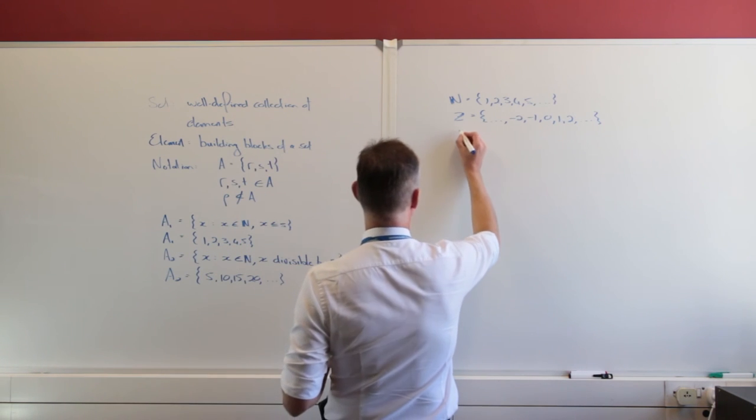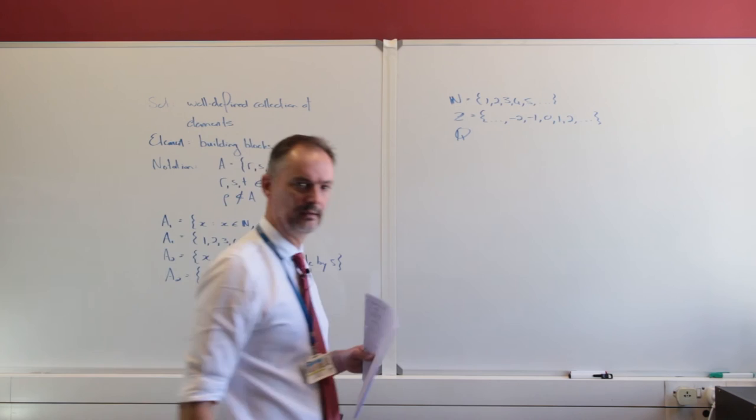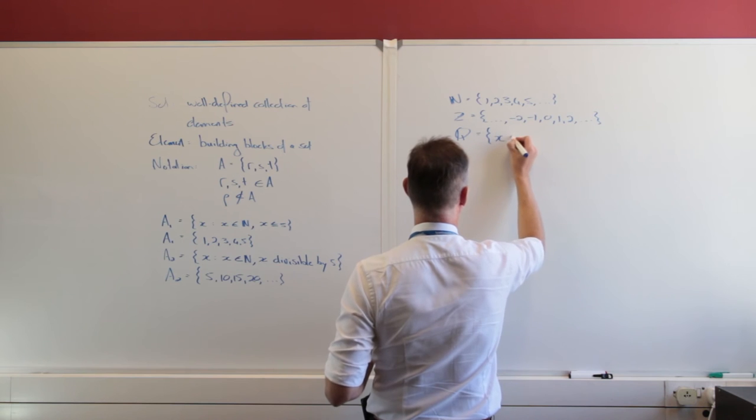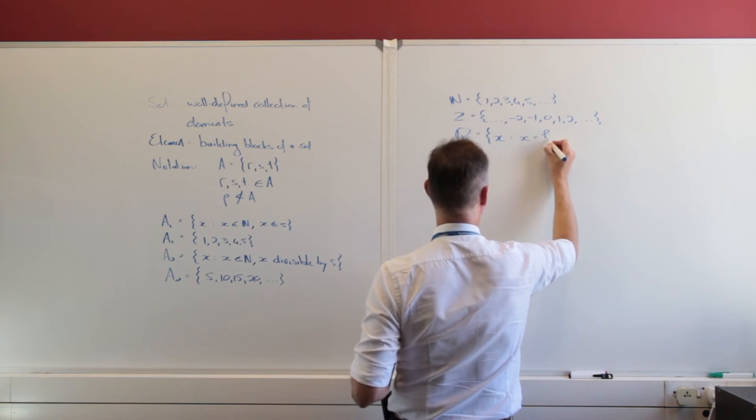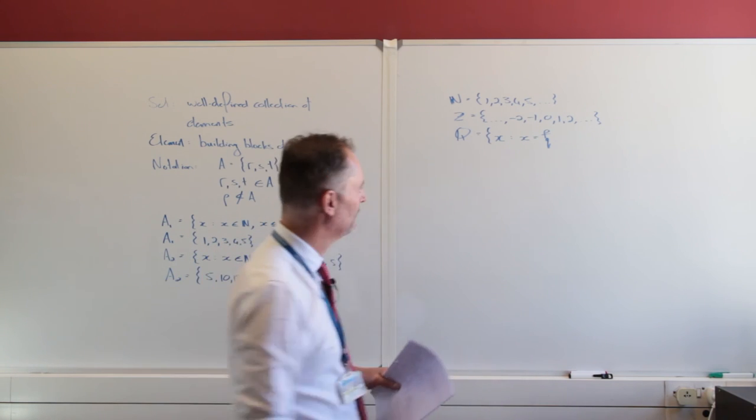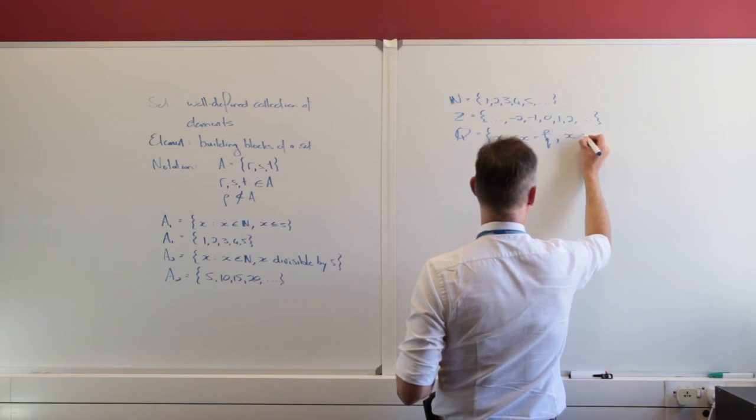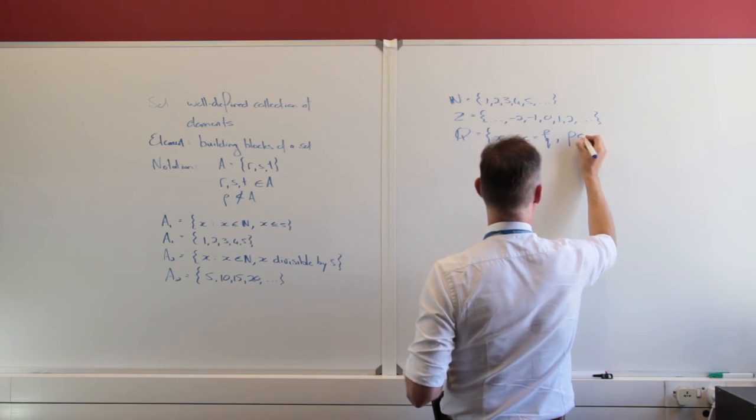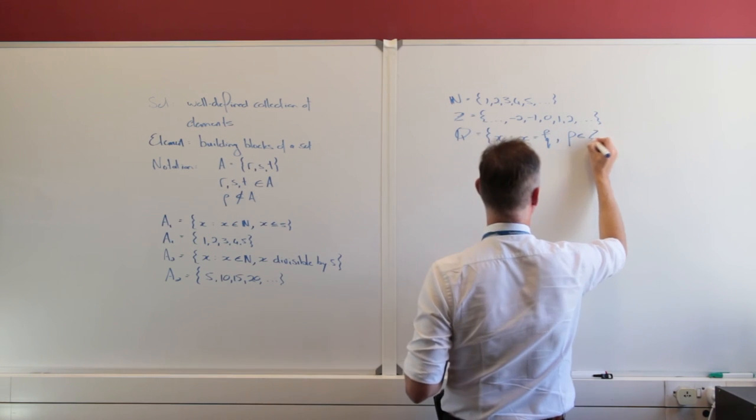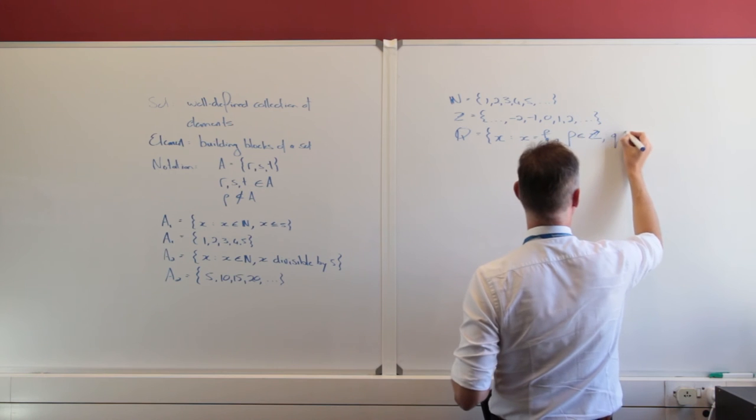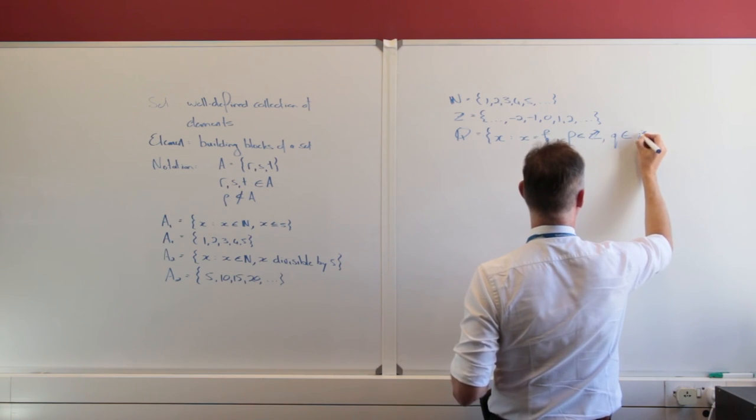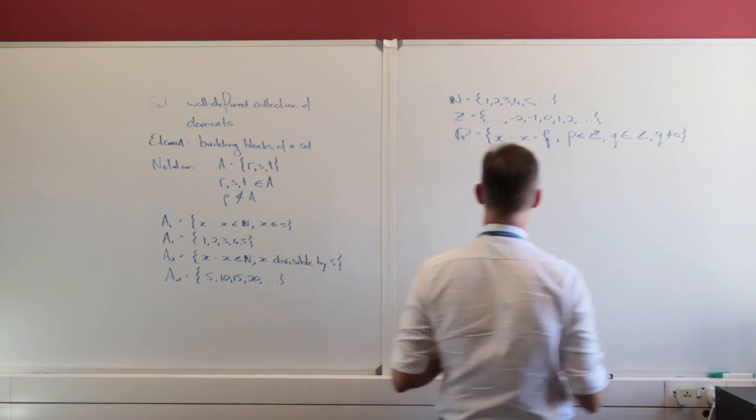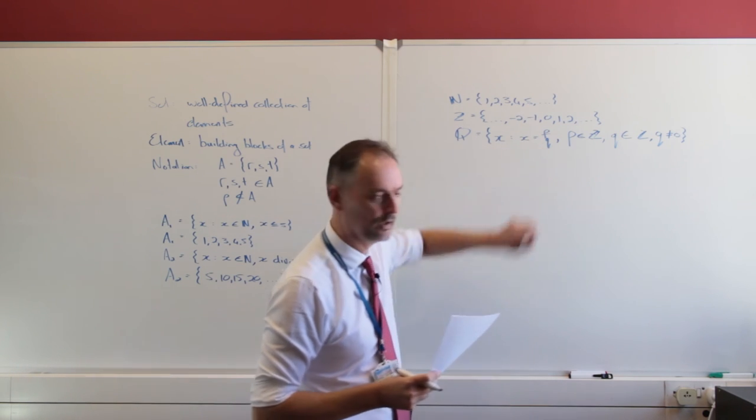That brings us to the rational numbers, the set of rational numbers, denoted there by a double stroke Q. And that is going to be all the elements X such that X is equal to P over Q. P is an element of the integers, Q is an element of the integers, and Q is not equal to 0. We can't divide by 0. So we've all seen those, the rational numbers is this quotient of integers.